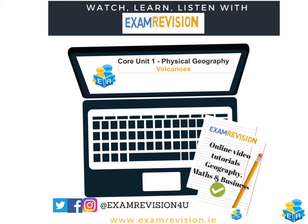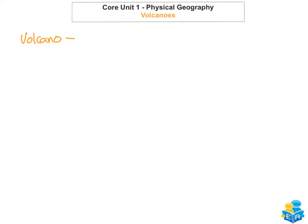Hi guys and welcome to today's tutorial. In today's lesson we're going to focus on volcanoes. We're going to look at what a volcano is, where we find volcanoes, and the reasons that we find volcanoes at different locations throughout the world. The first thing you need to know is what is a volcano — a volcano is an extrusive feature that forms when molten rock erupts onto the surface.